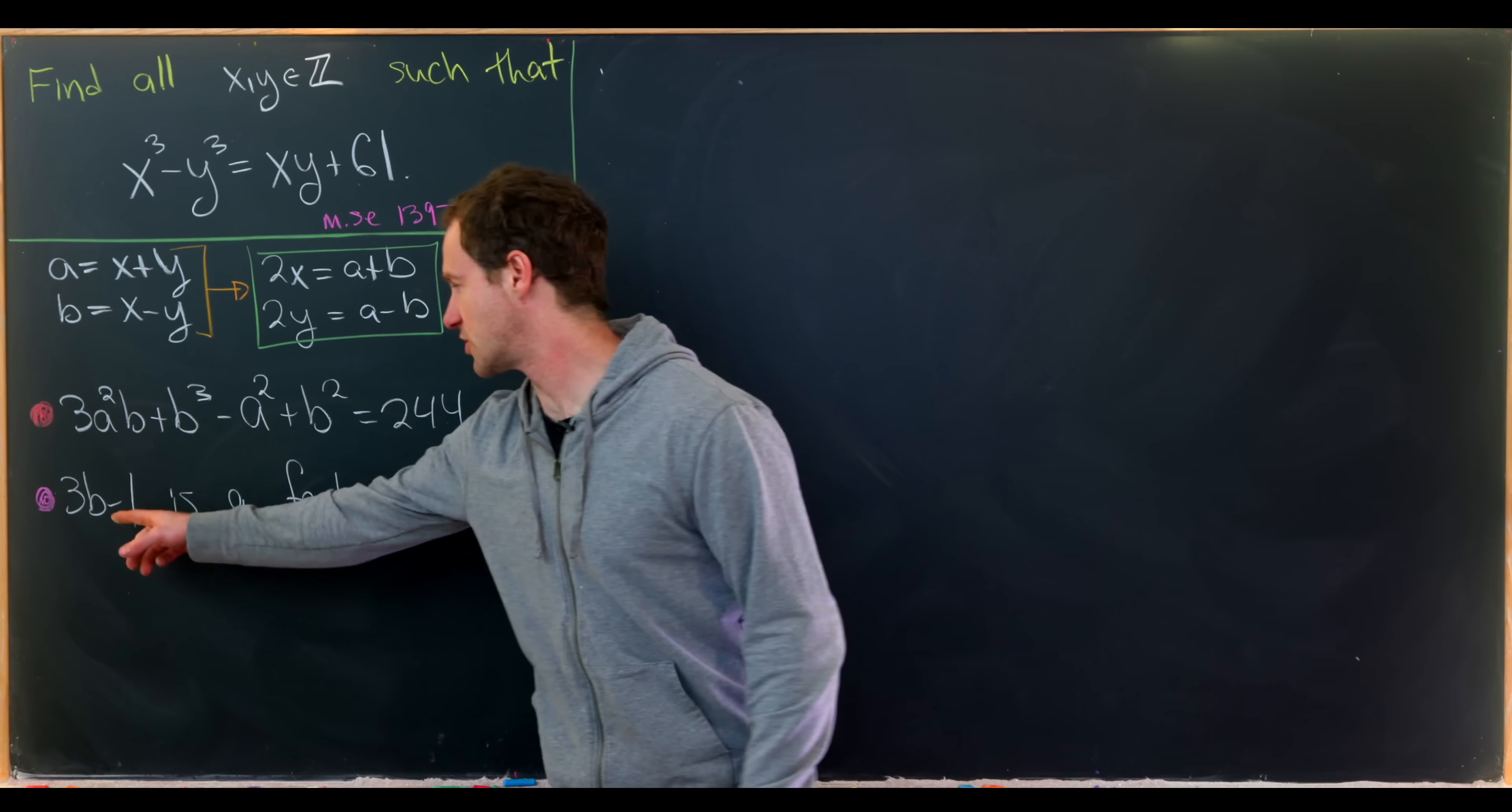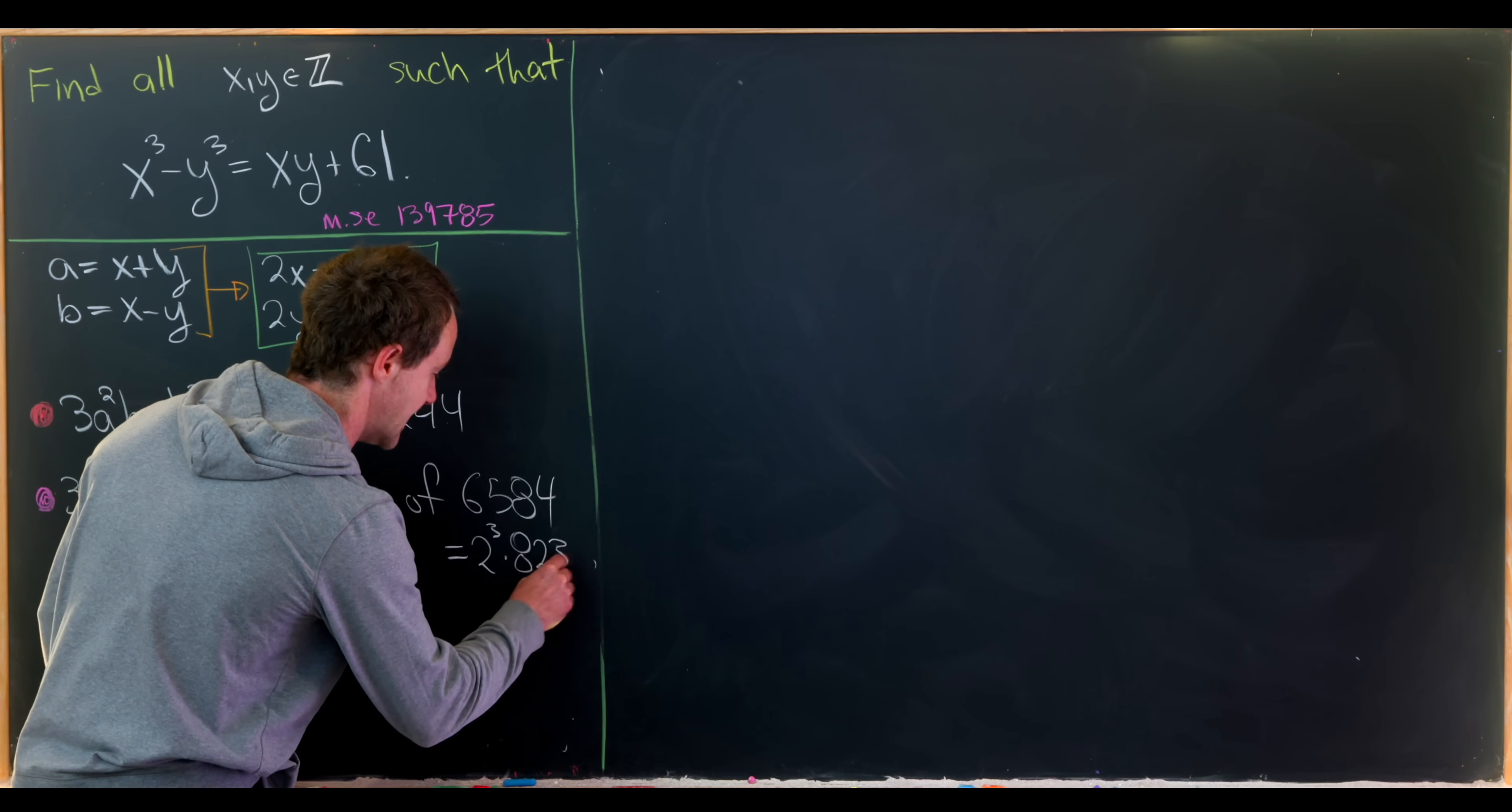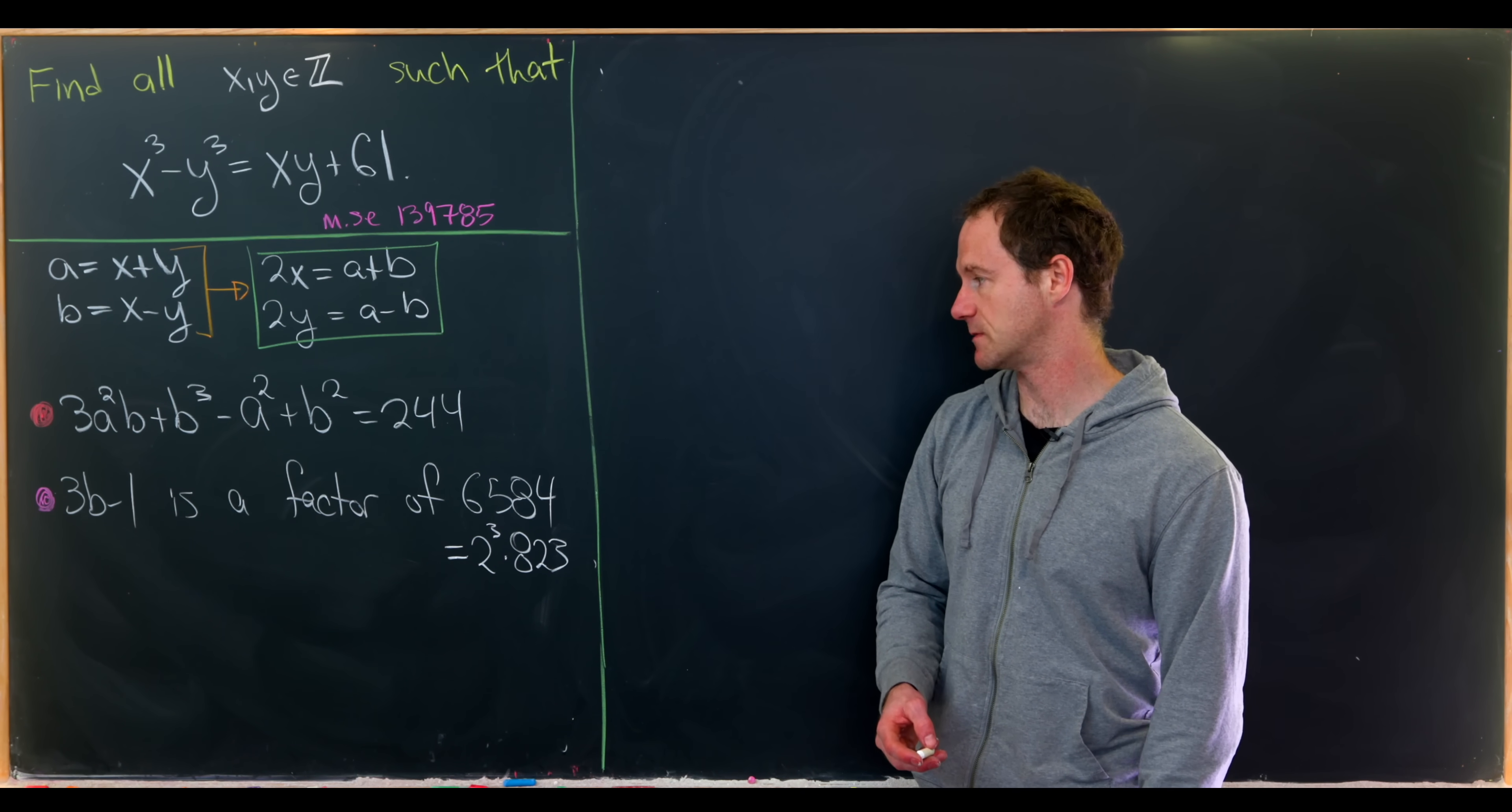Let's recall that we just determined that 3b minus 1 was a factor of 6584. In fact you can factor this as 2 cubed times 823, and 823 is in fact prime. So that gives us a strategy for writing down all of the factors. Furthermore we have this other equation which related a and b which will be useful in the last couple of steps.